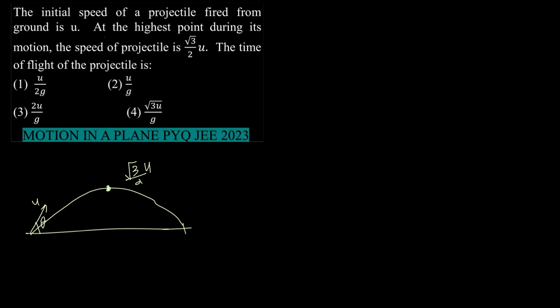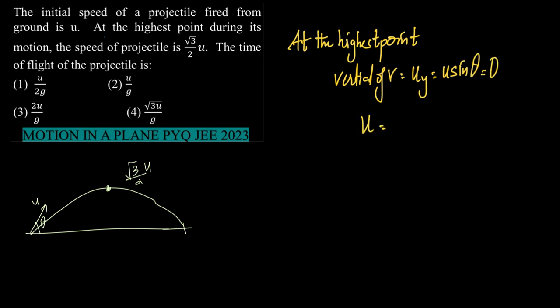So, we just discussed some time before that at the highest point, what is the vertical component? The vertical component of velocity Uy = U sin θ is 0. And what is the horizontal component? The horizontal component of U is Ux which is equal to U cos θ, which according to the question is given to us as √3/2 U, right?